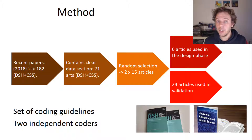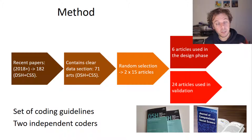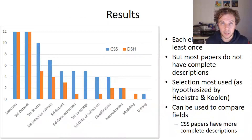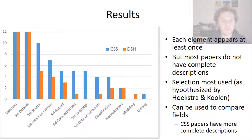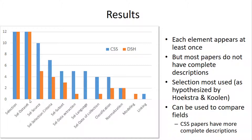We developed a set of coding guidelines, and then two independent coders identified the different elements in the papers — how the different data scope elements were represented in the text. The results show that all 24 papers at least report some selection procedure and present at least one dataset. For the other elements, we see that they are often not used or are less used.